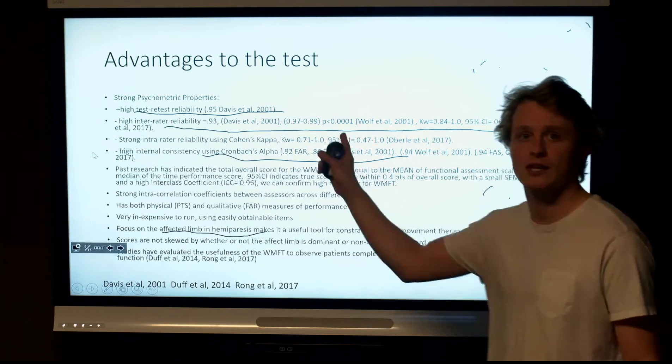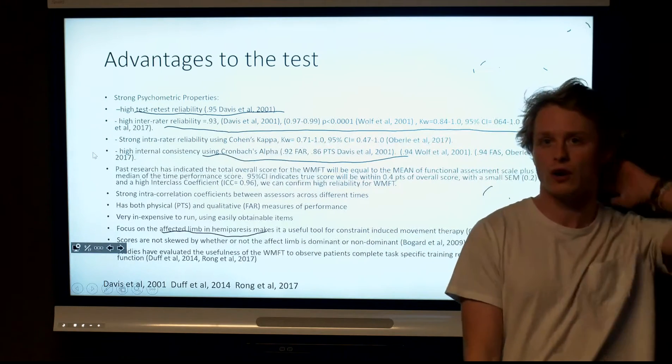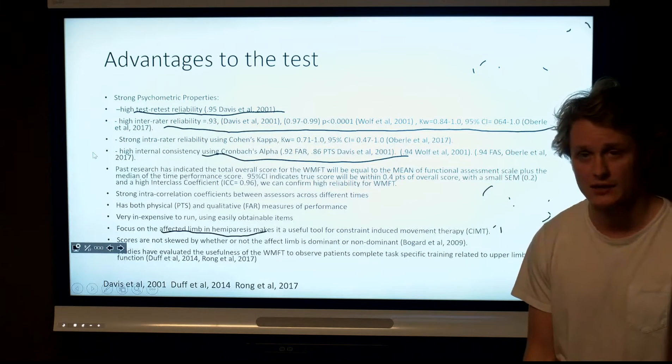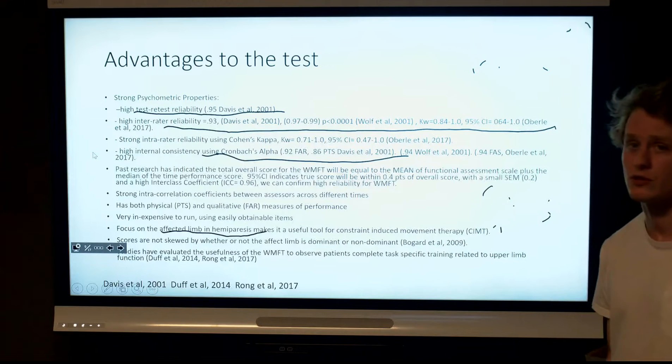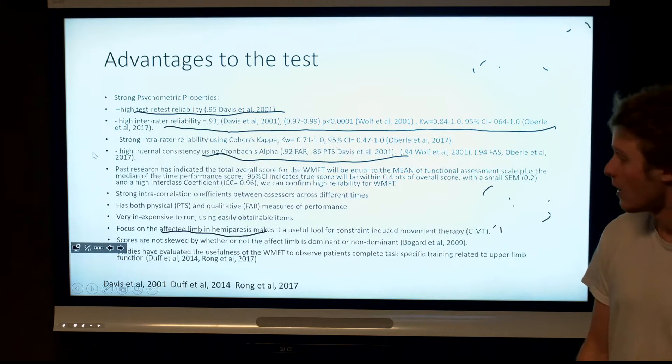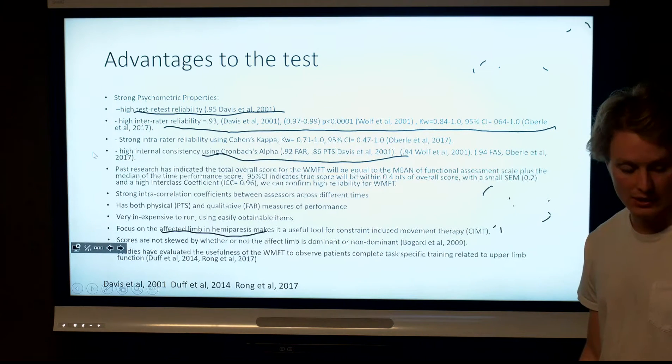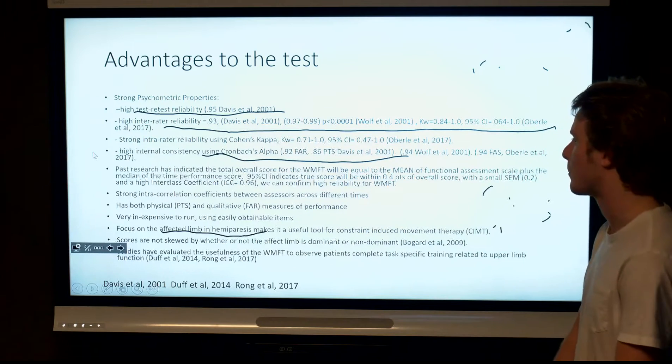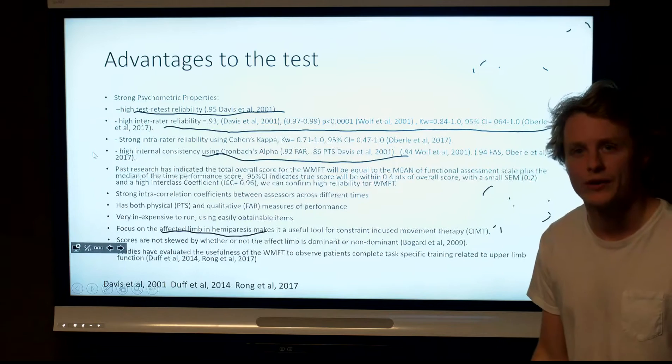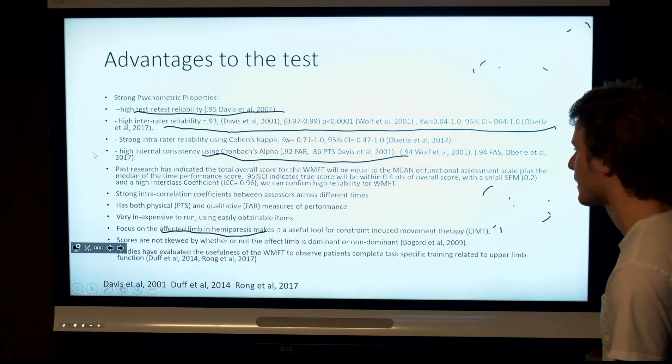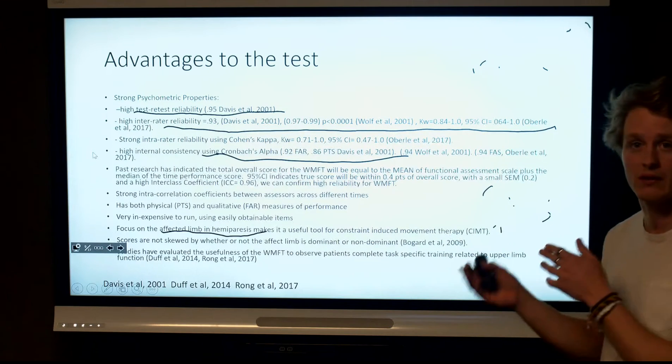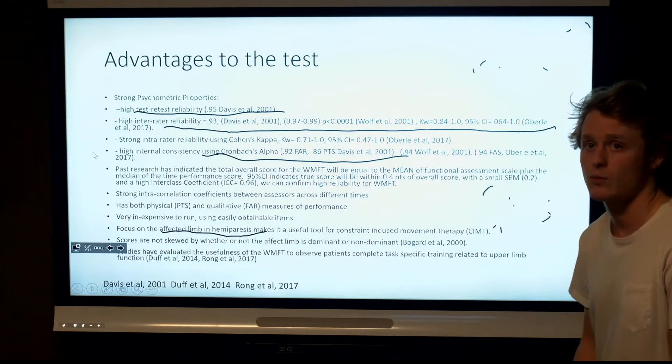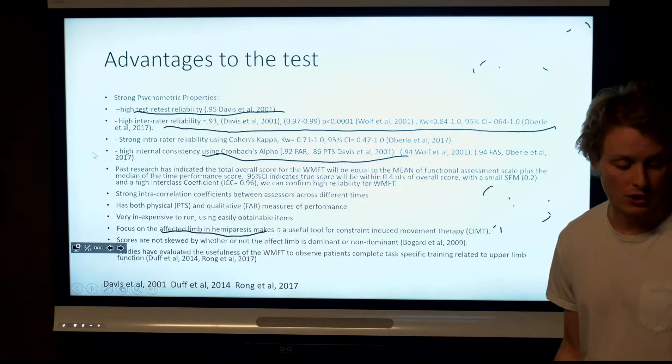The advantages of the test is that it has high test-retest reliability, as Davis found, which means at multiple times the test will yield similar results. There's also high inter-rater reliability, which means examiners tend to agree on the properties of the test and get similar results as several different studies have demonstrated with a strong 95% confidence rating. There's also internal consistency, which means that the test is a good indicator of what it says it is, and each of the functional items has a good outcome for motor ability. It also has physical and qualitative measures of performance in time and functional ability scales. It focuses on the affected limb and hemiparesis, which is a key part of constraint-induced movement therapy, and it's why it's such a valid test and continues to be used. It's also quite cheap and easy to manage and run.